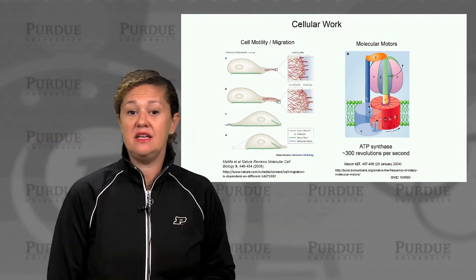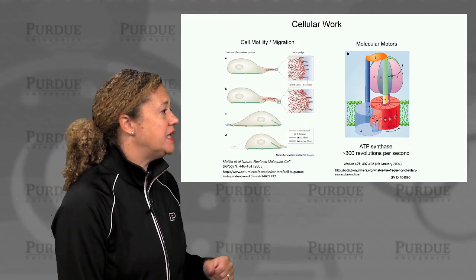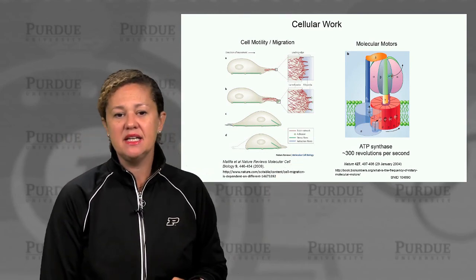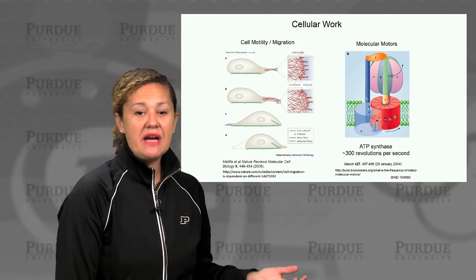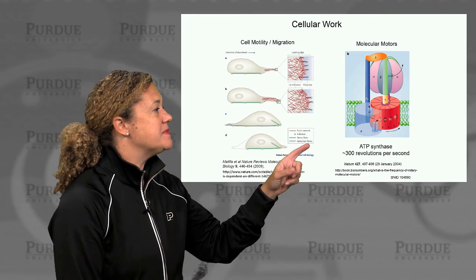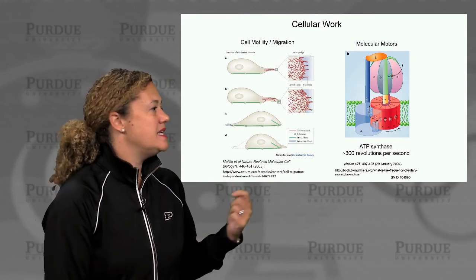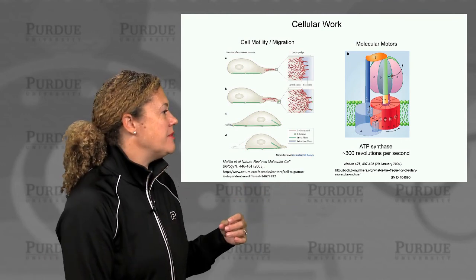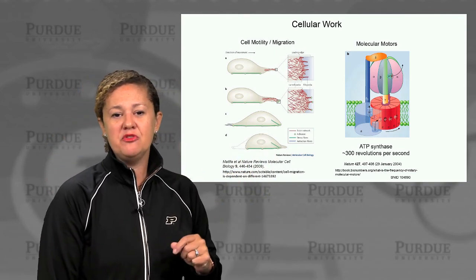Another example is that cells contain molecular motors. This is another great mechanical analogy and has been studied quite a bit. Here's an example of a very well-studied molecular motor, the ATP synthase. As the name implies, we're actually generating ATP here from the conversion of an electrochemical potential. This protein complex physically moves and rotates — it functions like a motor. It takes in power, rotates, and converts electrochemical potential from a proton gradient into ATP via the movement of this motor.